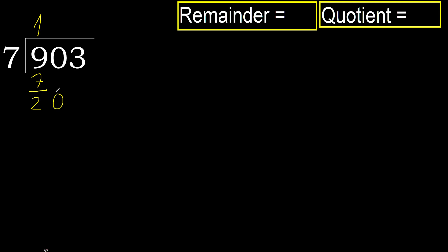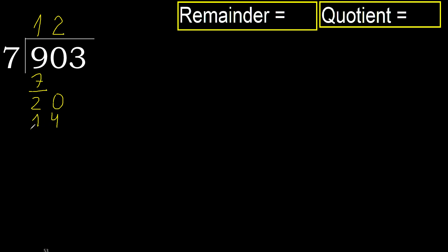20. 7 multiplied by 3 is 21, which is greater. Multiply by 2: 14 is not greater. Subtract: 20 minus 14 is 6. Next.